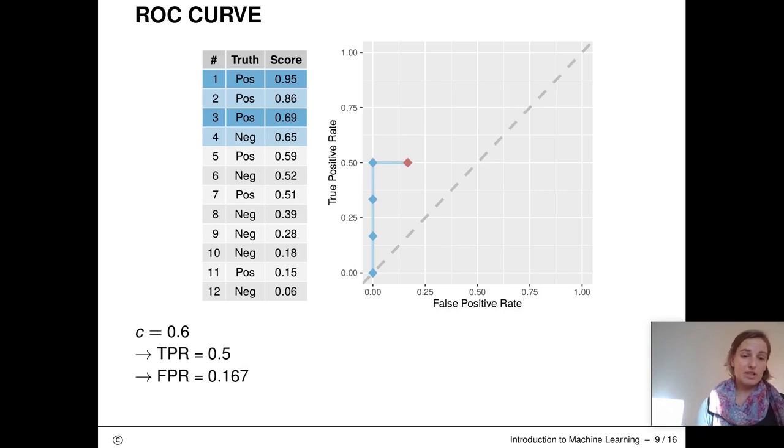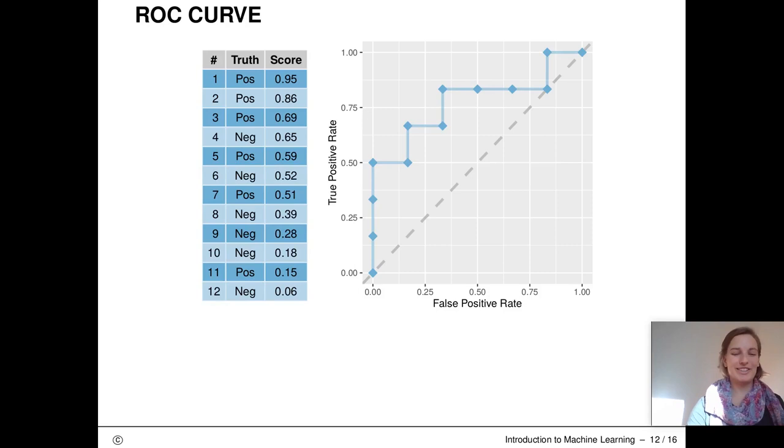The fourth observation is actually negative. So if we take a threshold below 0.65, the FPR increases. For a threshold of 0.6, for example, we get an FPR of 0.167, because one out of six negative observations is now classified as positive. Now we do this for every possible threshold, and finally we get a curve which starts in 0.0 and goes to 1.1.